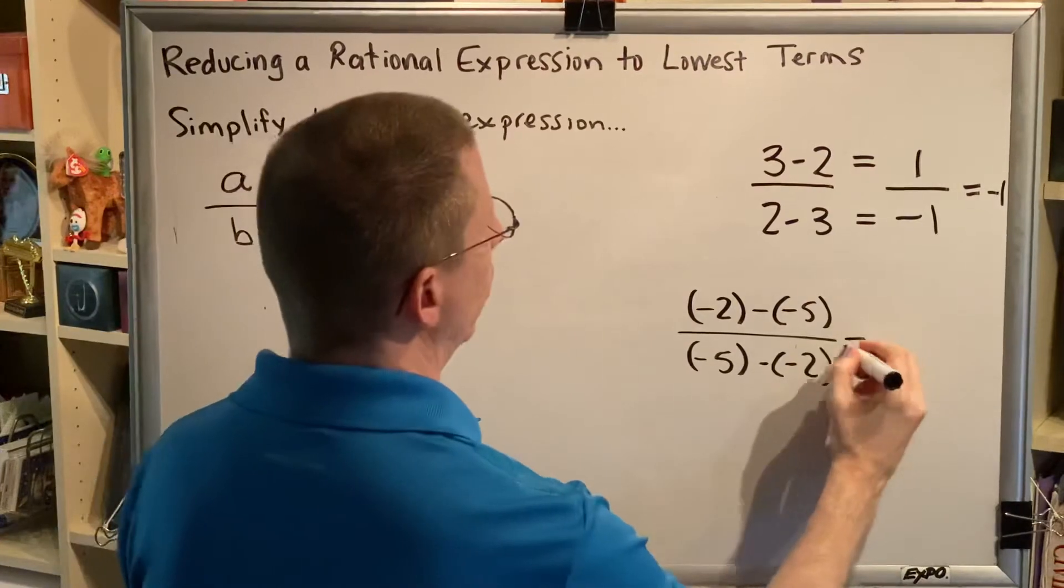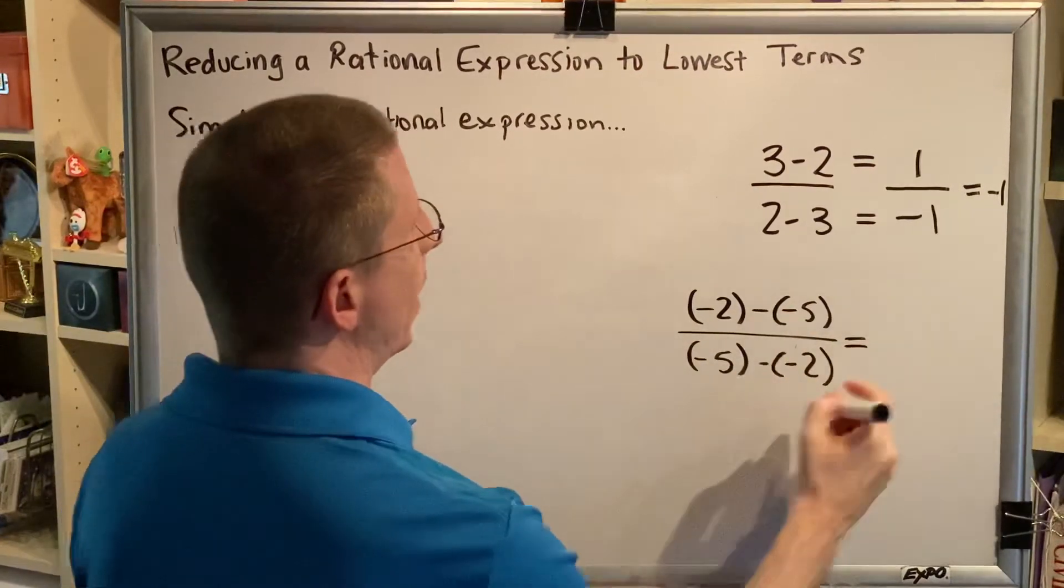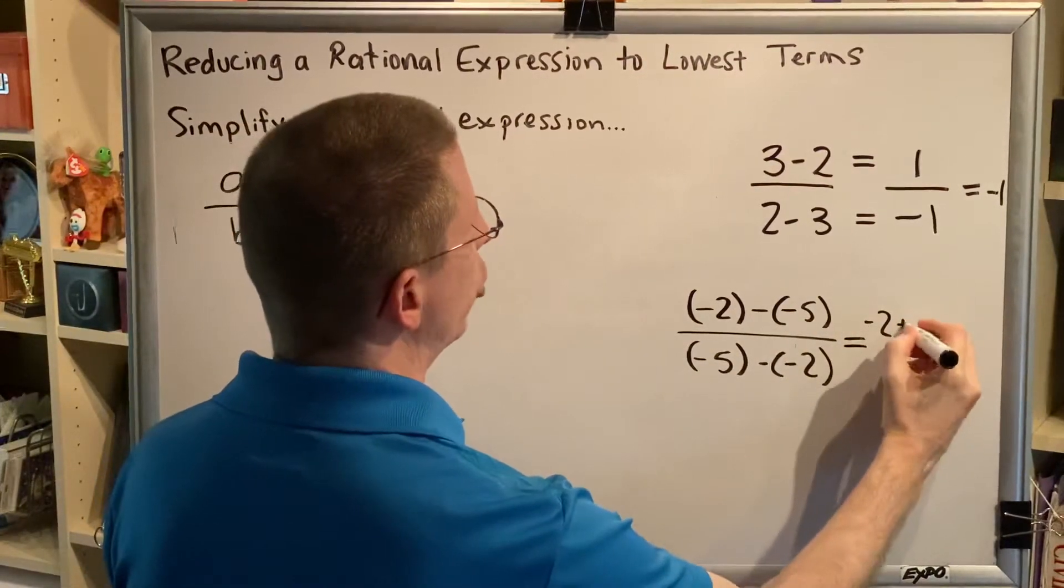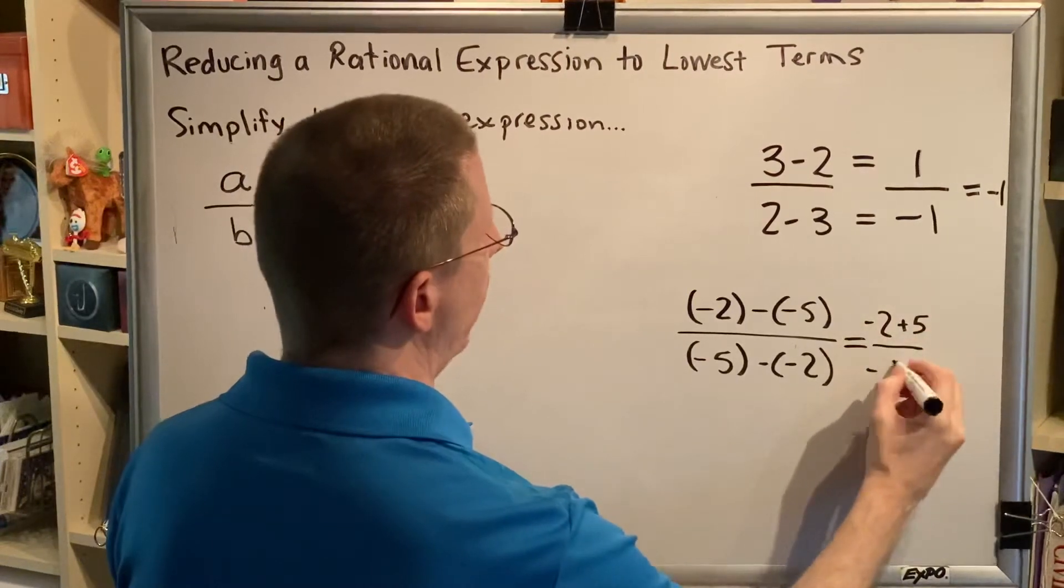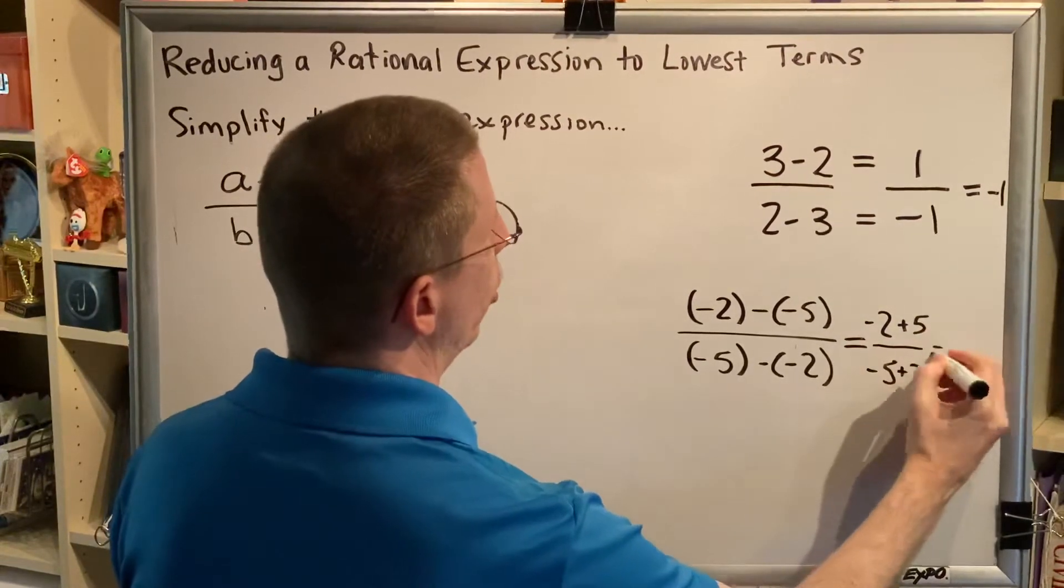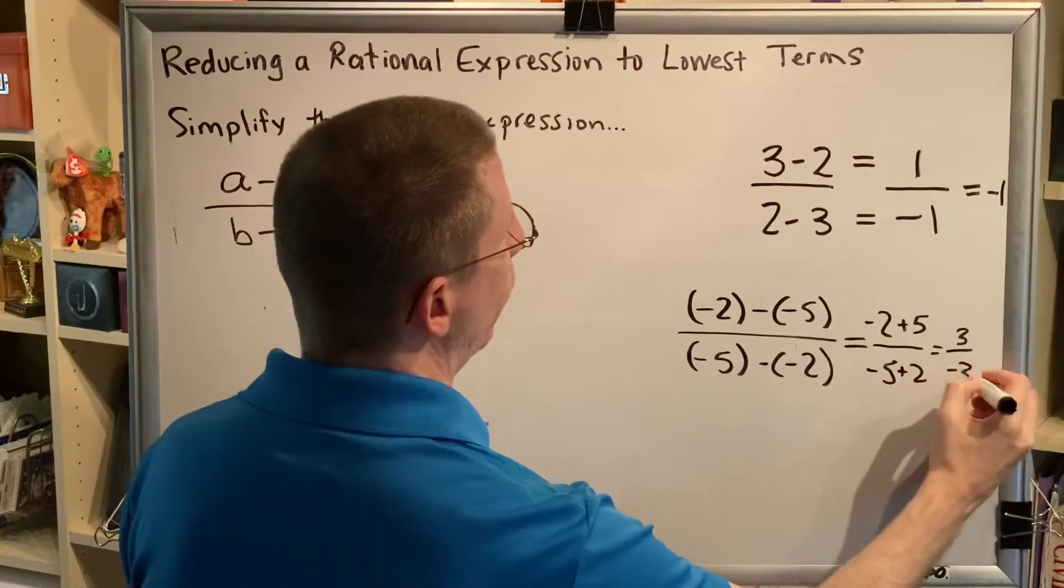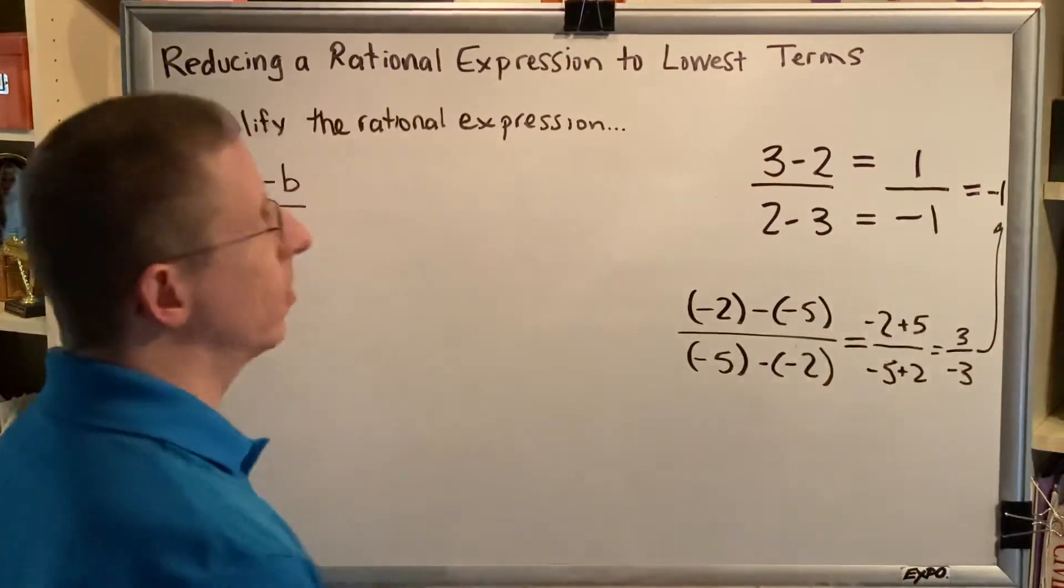What would happen here? Well, subtracting a negative is the same as adding. So we'd have negative 2 plus 5 over negative 5 plus 2, 3 over negative 3, which again gives us negative 1.